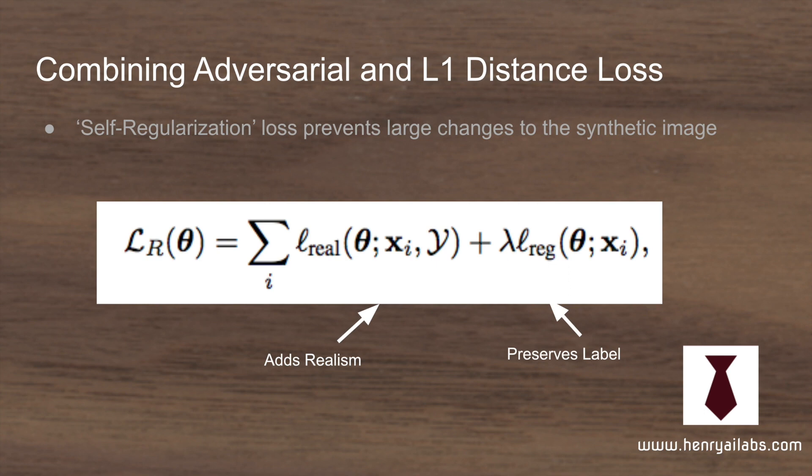There are three key ideas that they implement to make this work. The first idea is a weighting between adversarial and L1 distance loss. Because they're doing image-to-image translation, they don't start from random vectors — they start from the synthetic image. So they want to use the adversarial loss, but they also don't want it to change the image too dramatically. So they have these two terms weighted by a lambda parameter to make sure that it adds realism but doesn't distort the image too much.